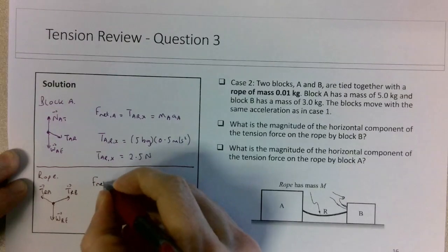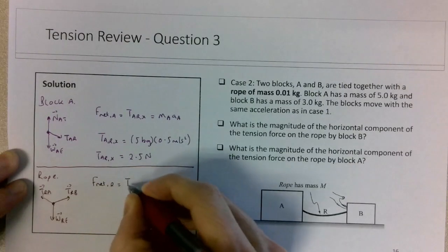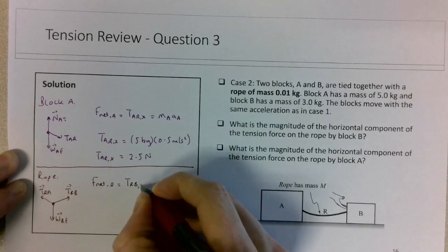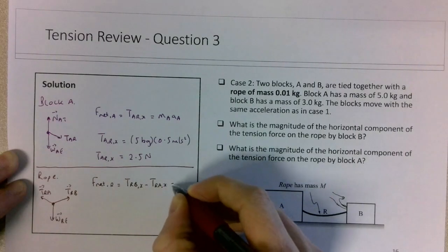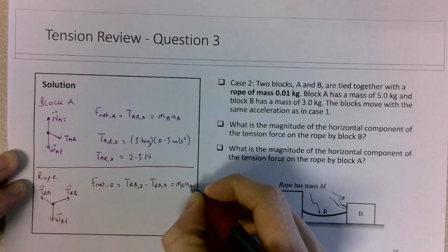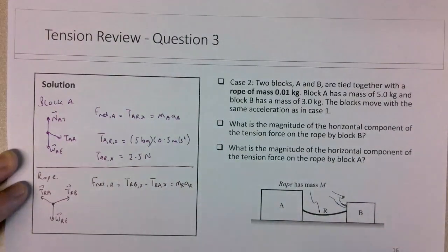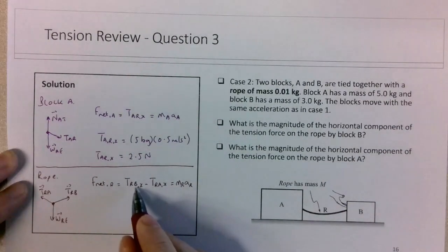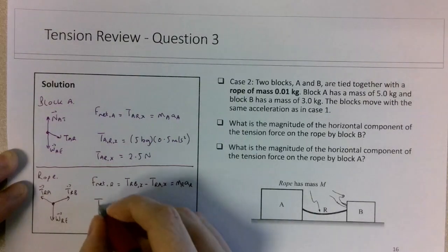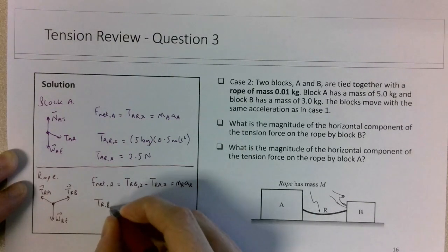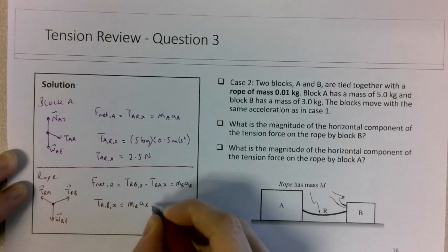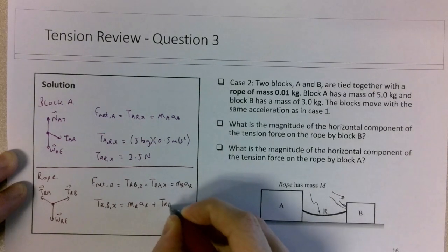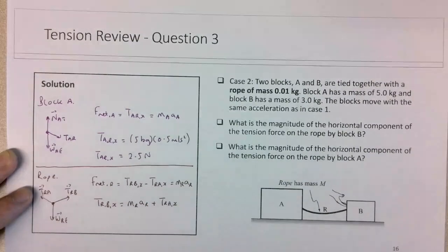So the F_net on the rope is going to be T_RB in the x direction minus T_RA in the x direction. That would be the mass of the rope times the acceleration of the rope. So if we want to try to solve for the tension of the rope by block B, T_RB_x will be mass of the rope times the acceleration of the rope, plus T_RA in the x, which we've solved for just above.